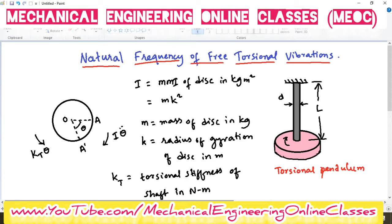Here we are considering a uniform shaft of negligible mass — indicated in grey colour. This shaft is rigidly fixed at one end, and at the other end there is a disk which is placed. This disk has a mass equal to small m.